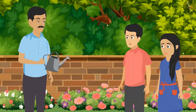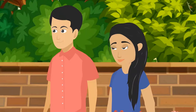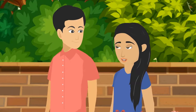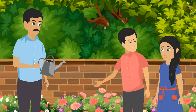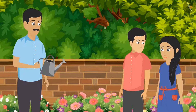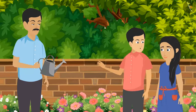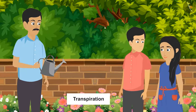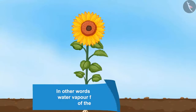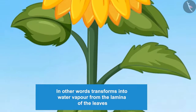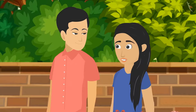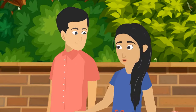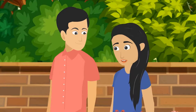Making food by leaves is probably the most important task of a plant. The leaves also perform one more important task which is called transpiration — the excess water of the plant gets evaporated, or in other words transforms into water vapor, from the lamina of the leaves. Lamina is the broad green part of the leaf.